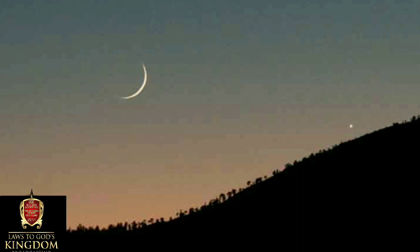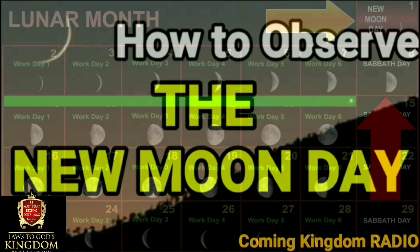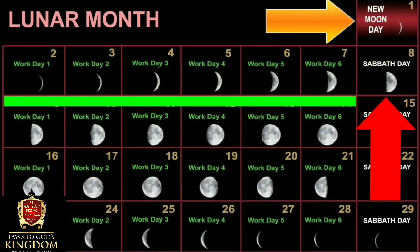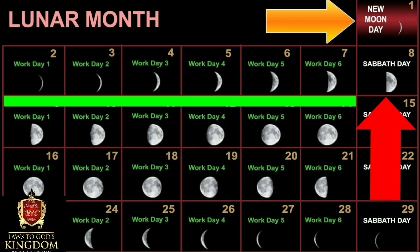If you see the first crescent that evening, that means you have a one-day New Moon Day. Then the next day you go to work, walking six days and resting on the seventh day — the Sabbath. You walk six days, rest on the seventh day.